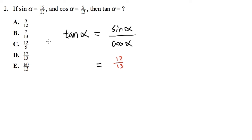12 over 13 for sine alpha, and then we have that big fraction bar. And then for the denominator, we have the cosine of alpha, and that's 5 over 13. So I can just put that down right here.